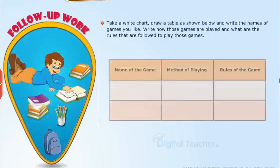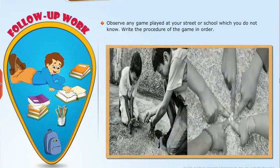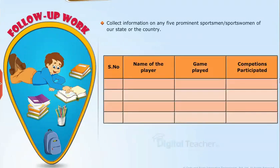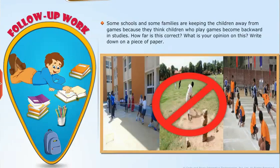Follow-up work: Take a white chart, draw a table, and write the names of games you like. Write how those games are played and what rules are followed. Observe any game played at your street or school which you do not know and write the procedure of the game in order. Collect information on any five prominent sportsmen or sportswomen of our state or the country. Draw the court of any game you play outside on a chart, mark the measurements, write the names, and describe it. Some schools and families keep children away from games because they think children who play games become backward in studies — how far is this correct? What is your opinion on this? Write down on a piece of paper.